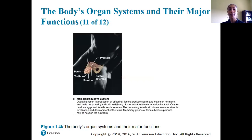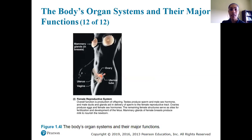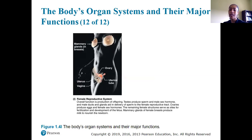The male reproductive system includes the prostate, penis, testes, scrotum, and ductus deferens; it aids in the production of male hormones called androgens and functions in reproduction. The female reproductive system consists of mammary glands, ovaries, uterus, vagina, and uterine tubes; its overall function is the production of offspring, as well as production of female gametes (eggs), female hormones (estrogens and progesterone), carrying a child, feeding a child via mammary glands, and participating in copulation.